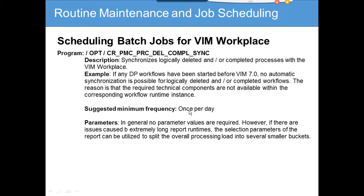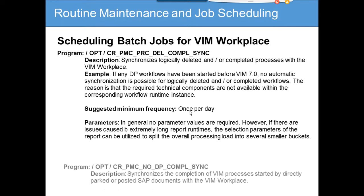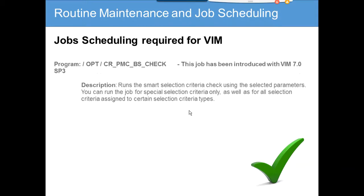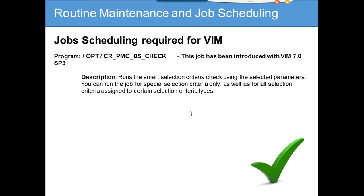The suggested minimum frequency is once per day, but based on your business process and volume you define it — there's no fixed best practice. The next job synchronizes the completion of VIM processes started by directly parked or posted SAP documents with the VIM Workplace. Another job, introduced with VIM 7 SP3, runs smart selection — you can filter invoices by company code, approval ID, or amount.